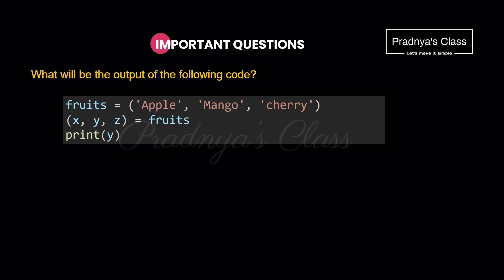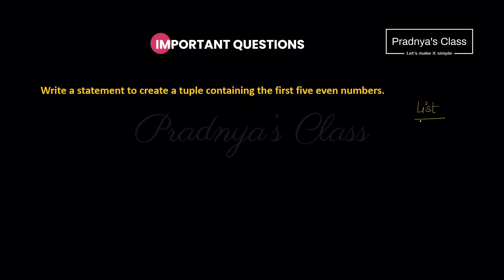The next question is based on unpacking. A tuple with three elements is created. In the next statement we unpack it — the first element goes into the first variable, the second into the second, and the third into the third. Printing y gives the second element, which is 'mango'. Important note: the number of variables on the left-hand side must match the number of elements in the tuple.